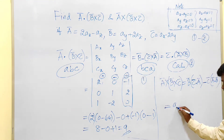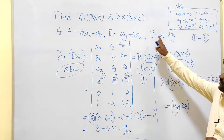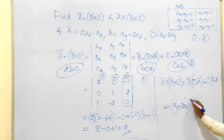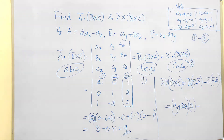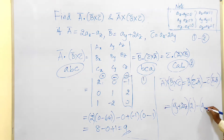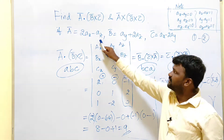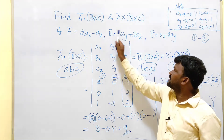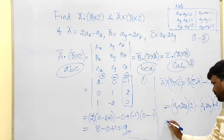Substituting: b bar = ay + 2az. Compute c bar · a bar: cx·ax = 1·2 = 2, then cy·ay = (−2)·0 = 0, cz·az = 0·(−1) = 0, giving c bar · a bar = 2. Next, c bar = ax − 2ay. Compute a bar · b bar: ax·bx = 0, ax·bz = 0, az·by = 0, az·bz = 1, so a bar · b bar = −1·2 = −2.